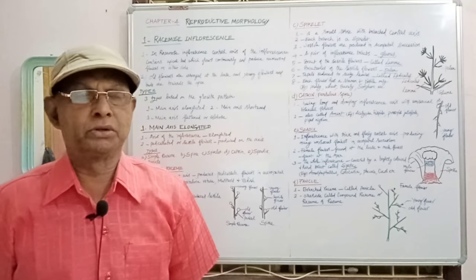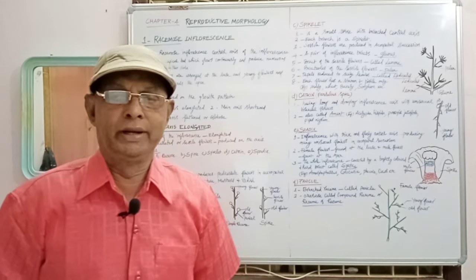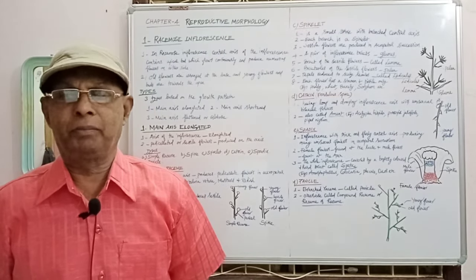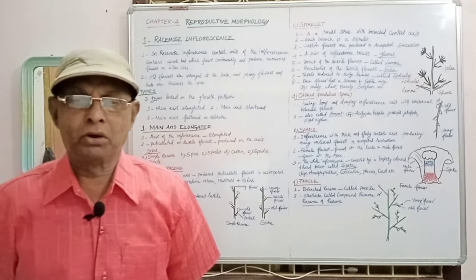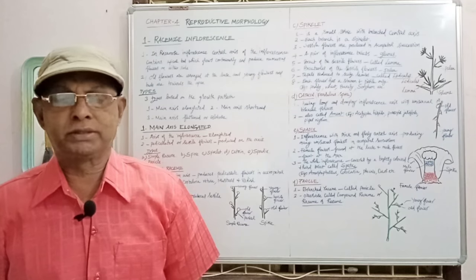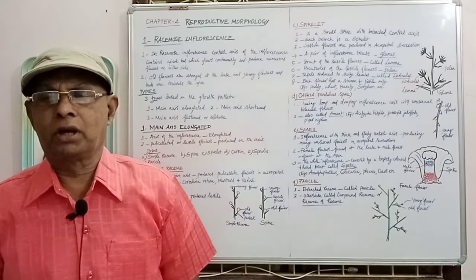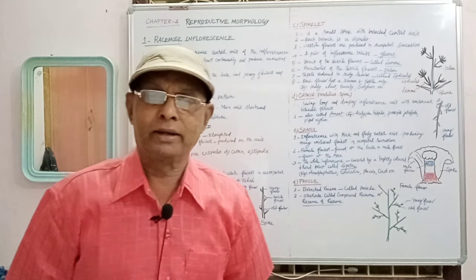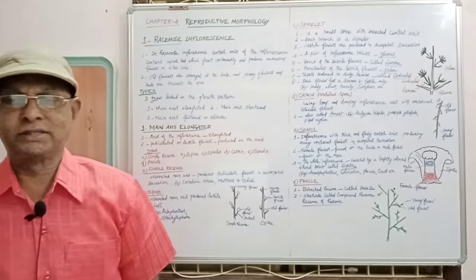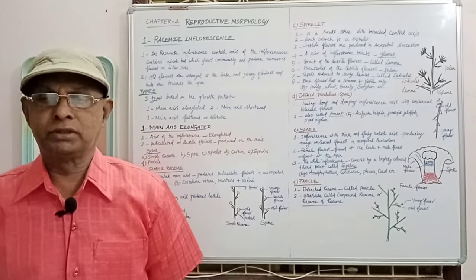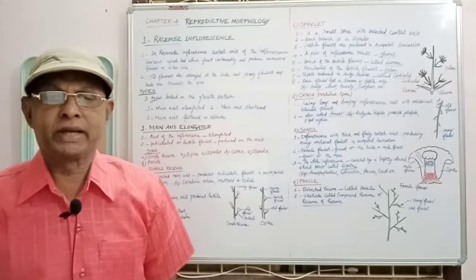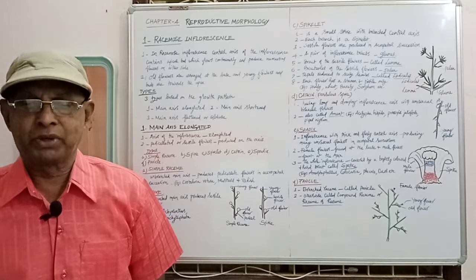The next type is catkin inflorescence. It is a pendulous spike type of inflorescence having a long and drooping inflorescence axis with unisexual or bisexual flowers. It is also called ament. For example, Casuarina, Prosopis juliflora, and Piper nigrum produce catkin type of inflorescence.